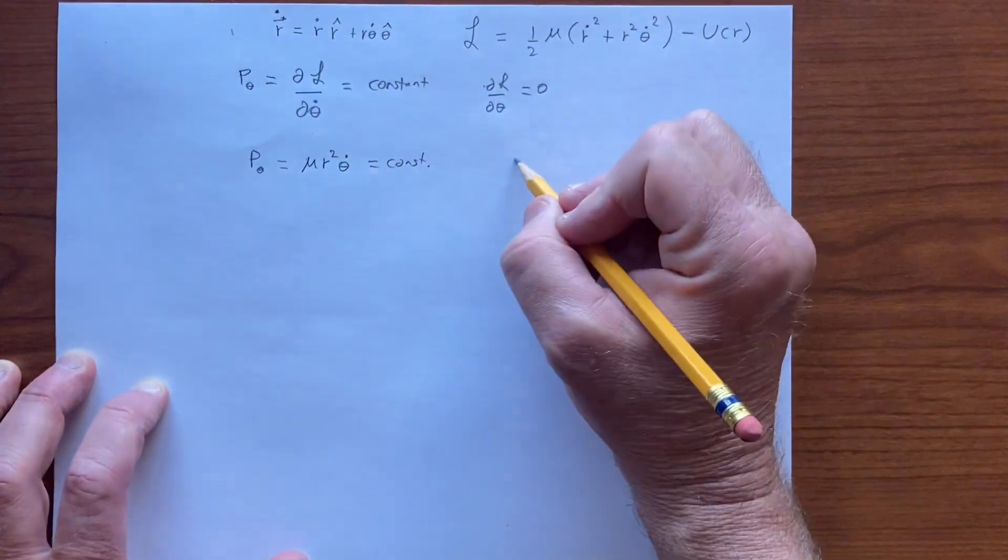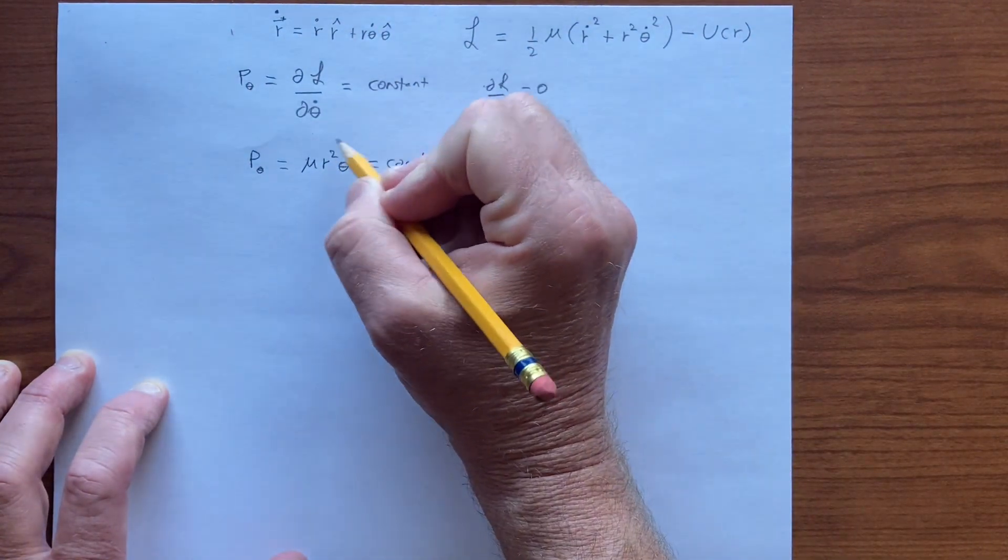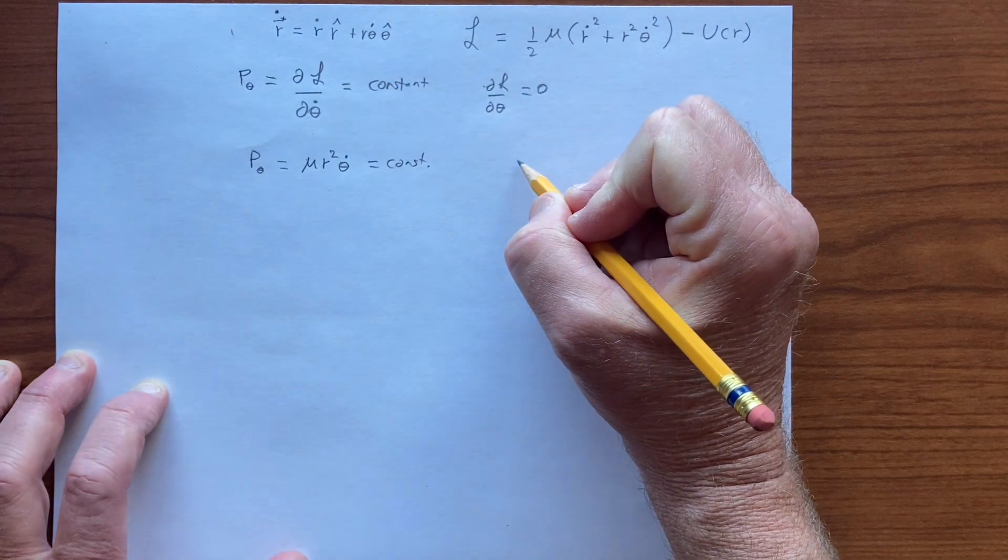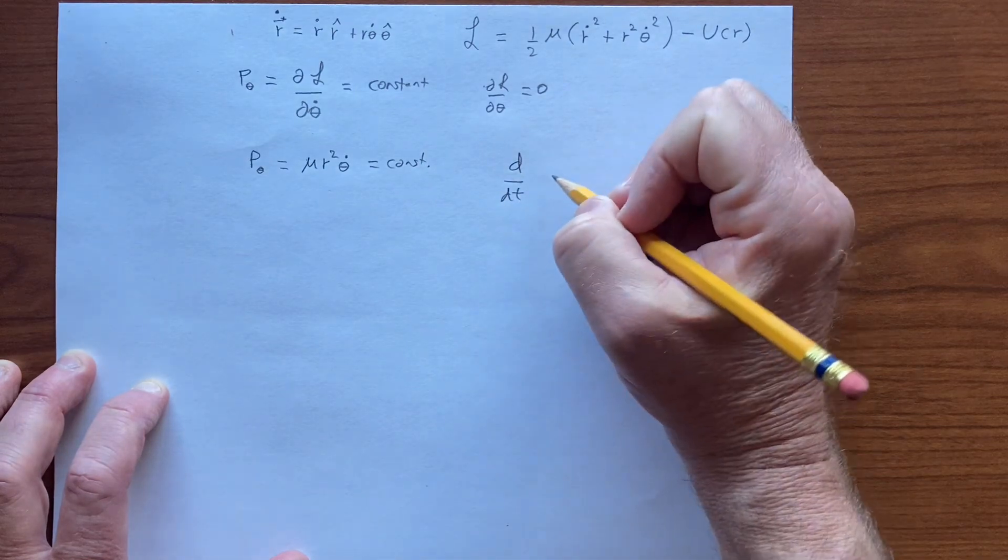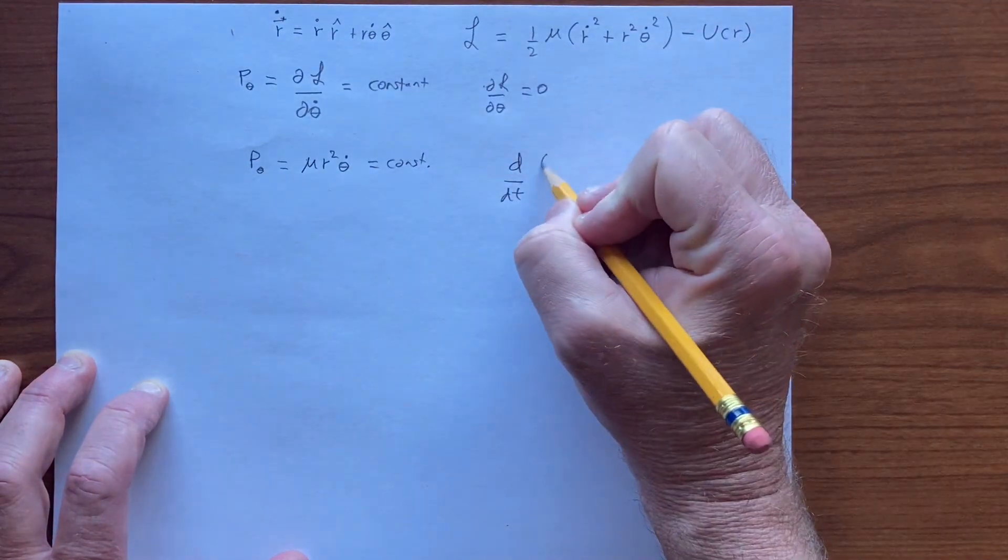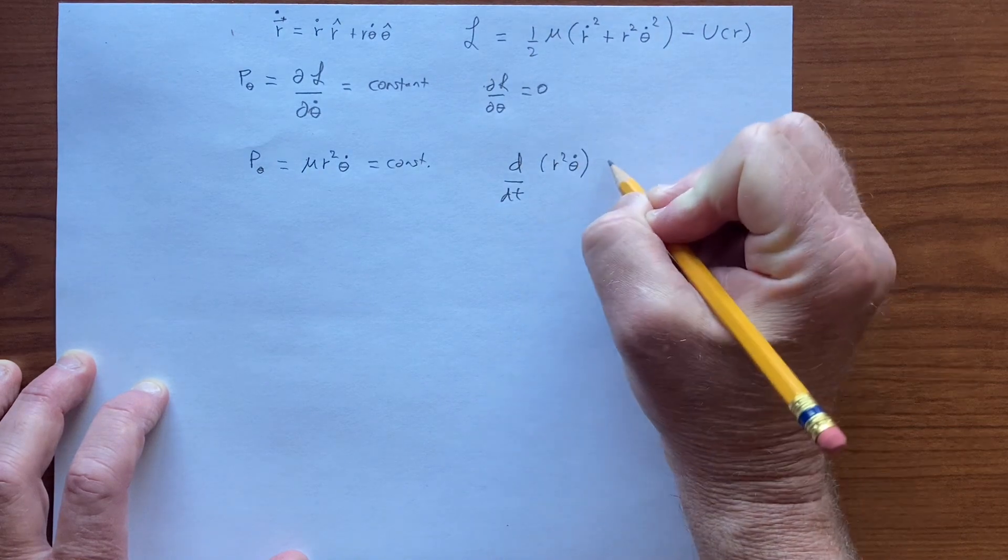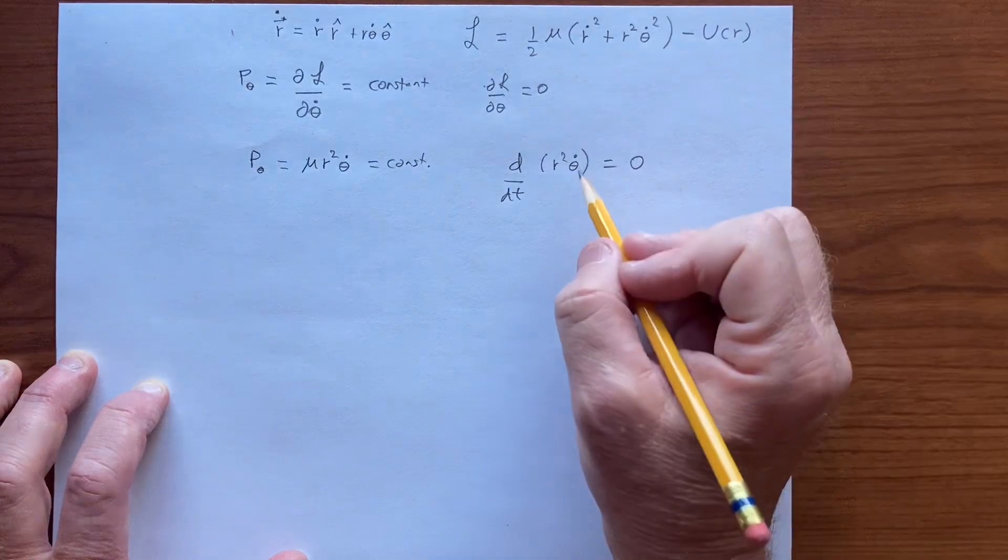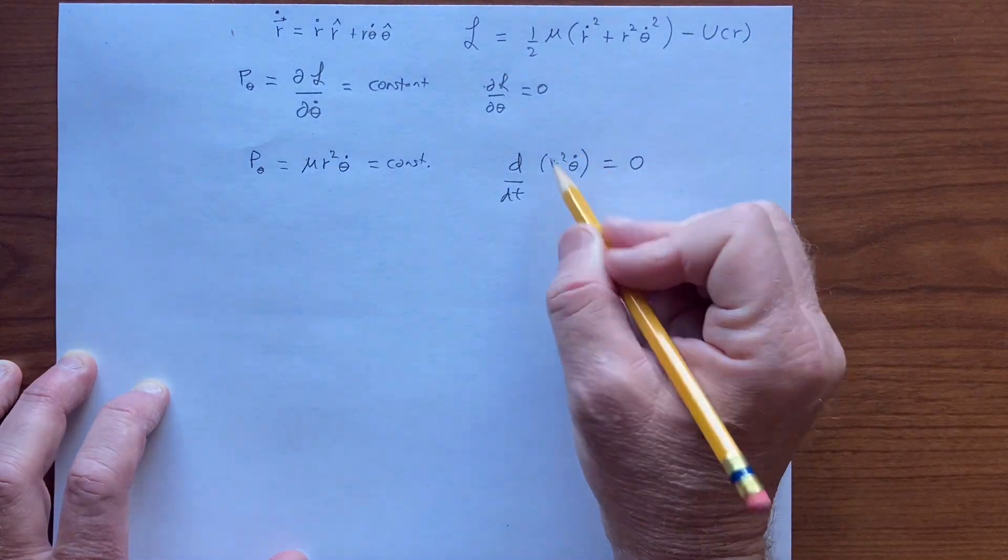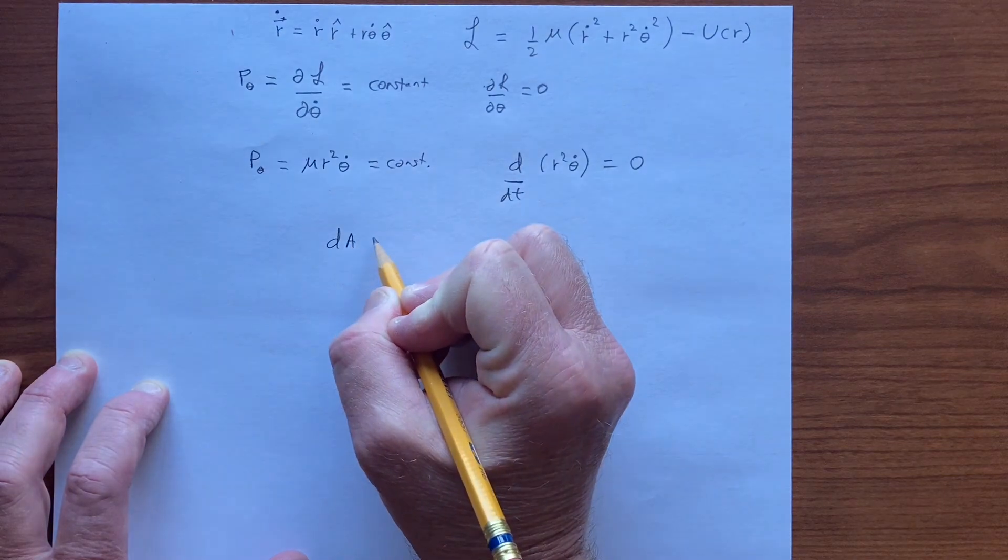So notice that if we just focus on this part, we can see that d by dt, this is a constant, then we have d by dt of r squared theta dot must be equal to zero. But this is an area, or it's an infinitesimal area.